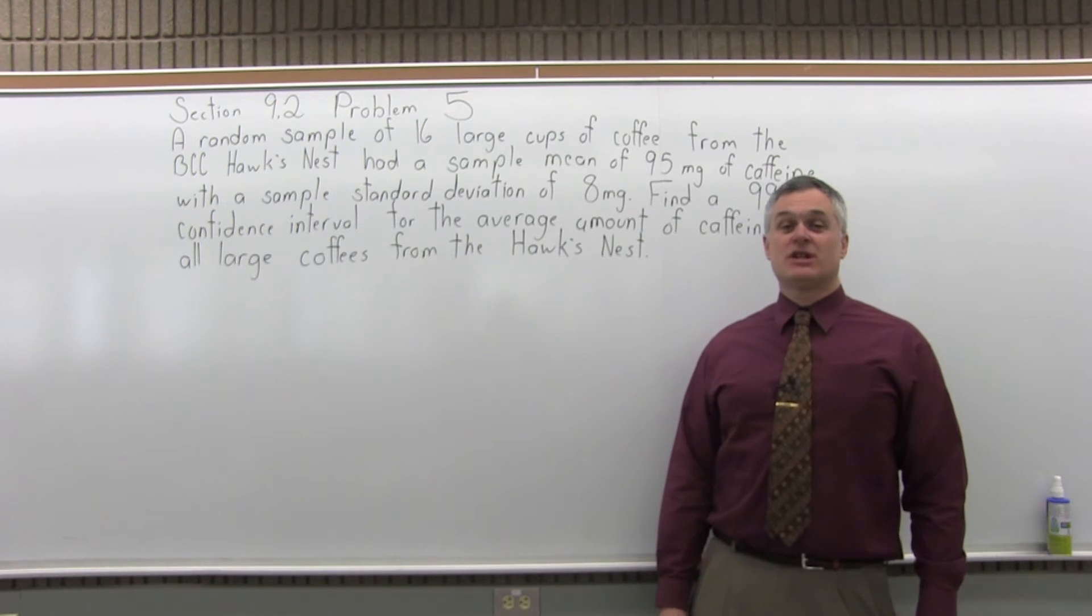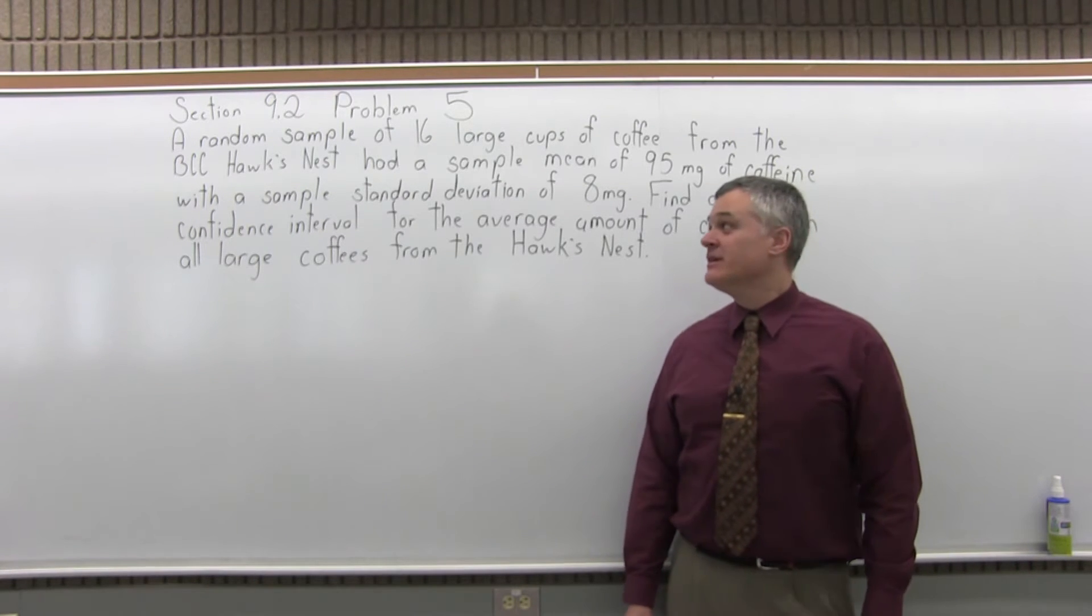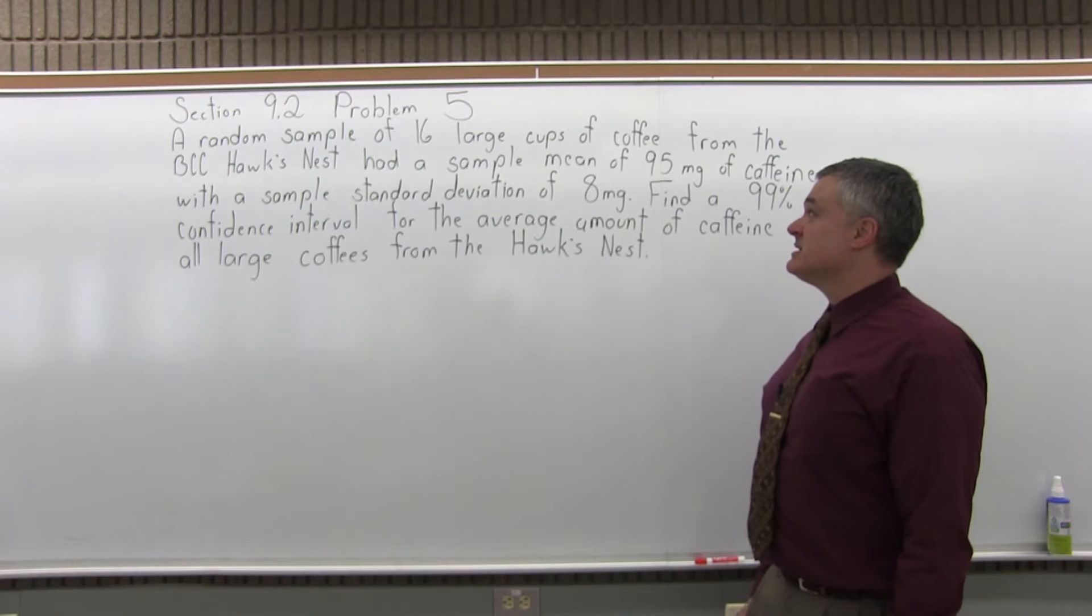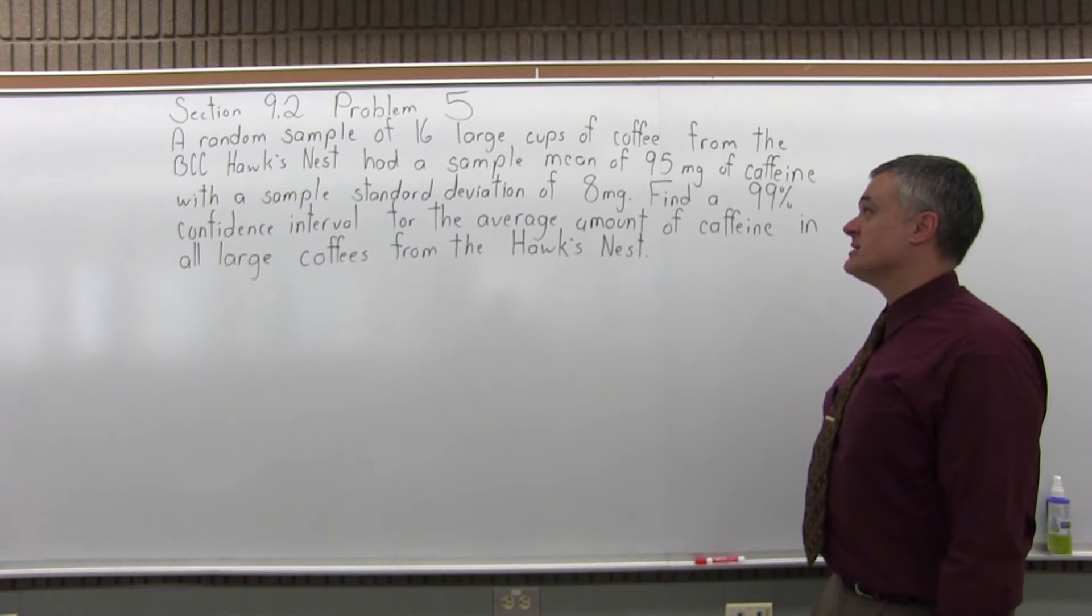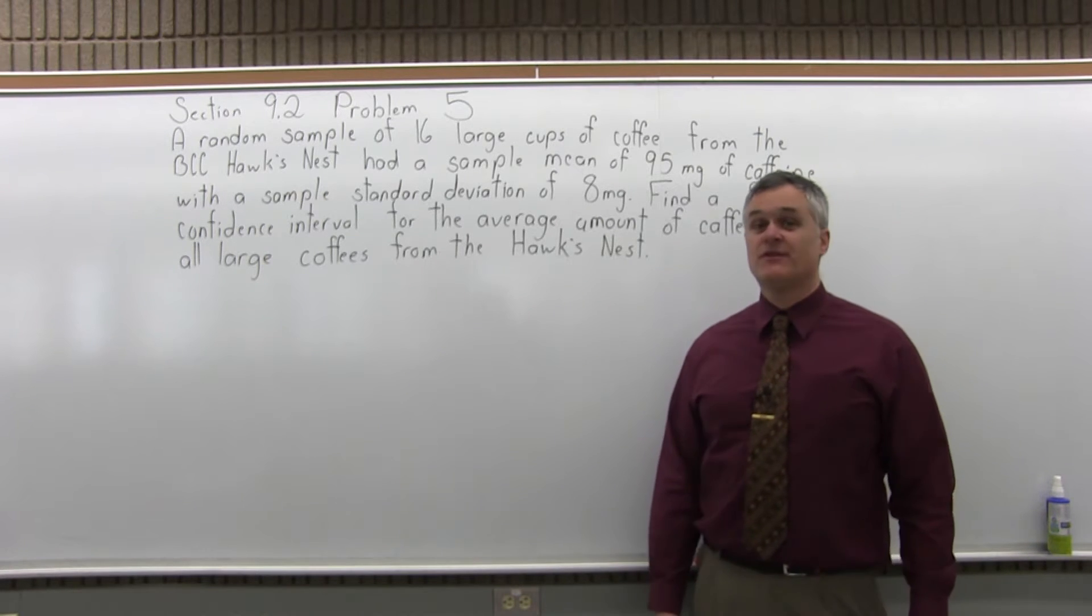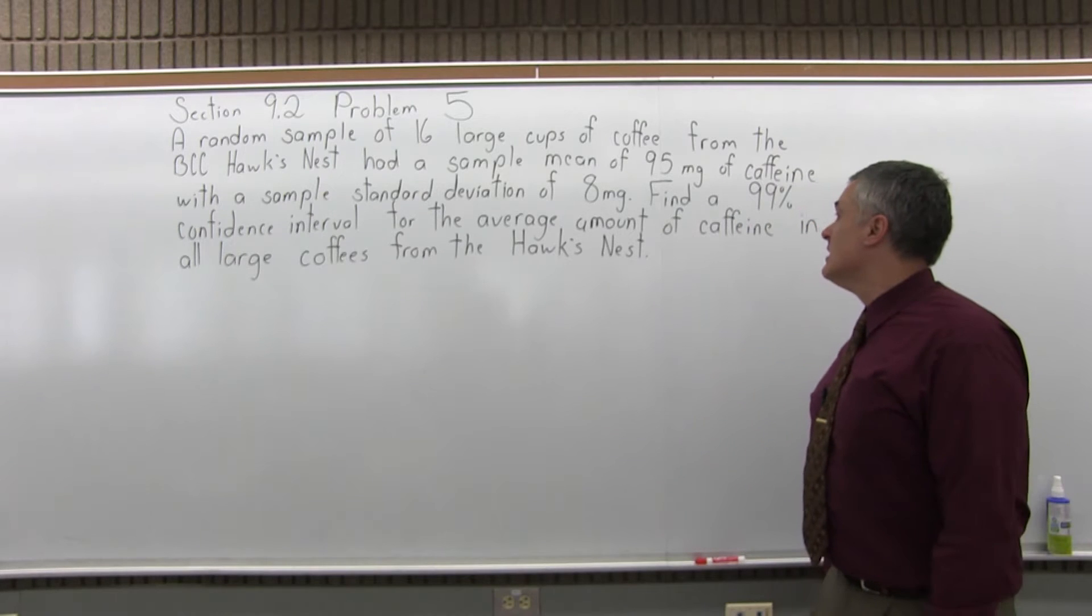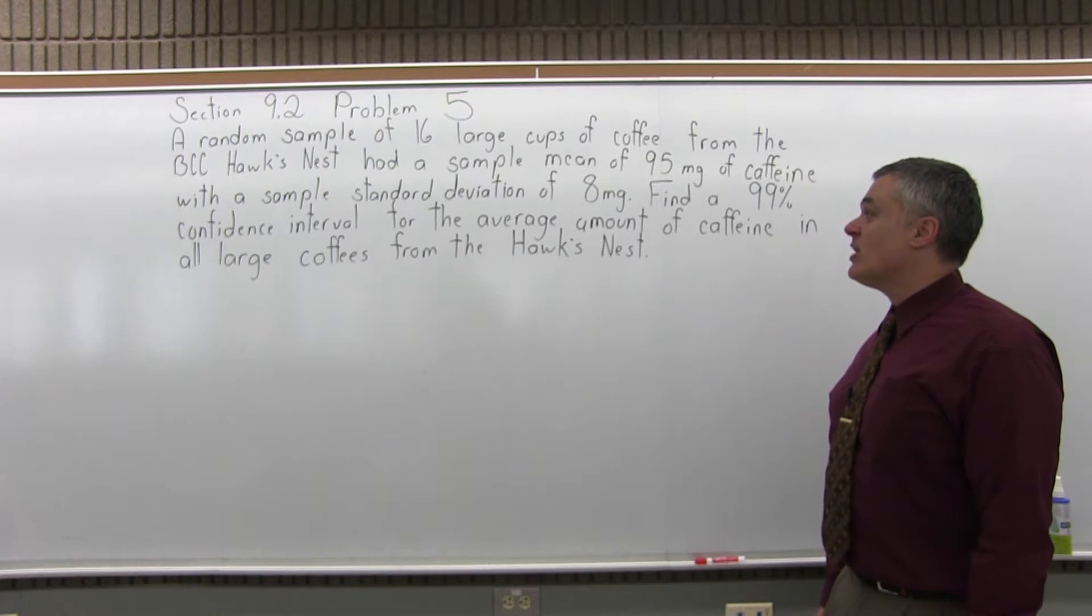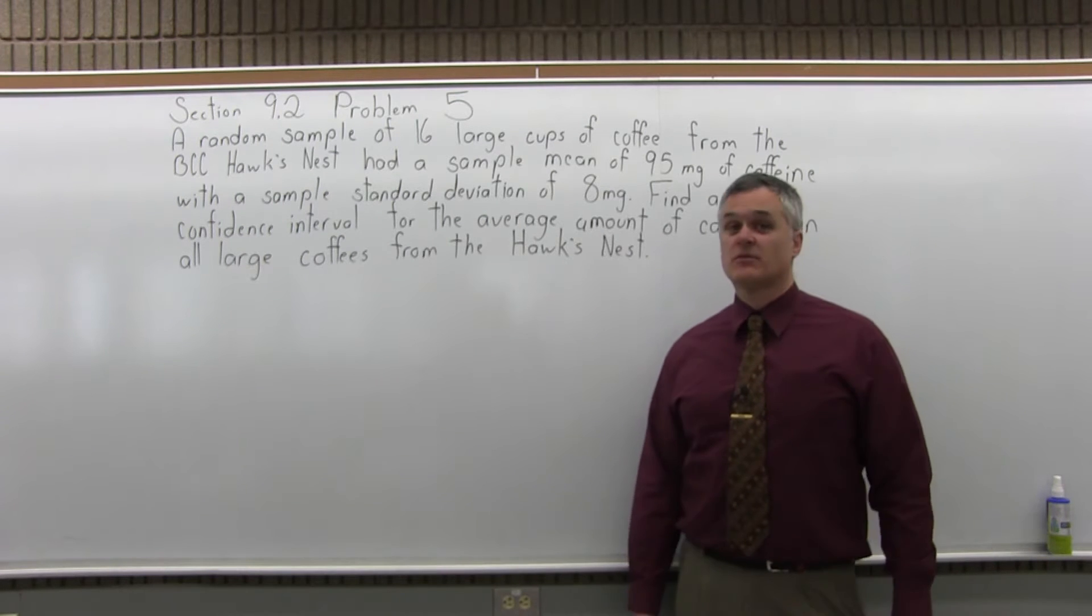This is Section 9.2, Problem 5. It says a random sample of 16 large cups of coffee from the BCC Hawk's Nest had a sample mean of 95 mg of caffeine with a sample standard deviation of 8 mg. Find a 99% confidence interval for the average amount of caffeine in all large coffees from the Hawk's Nest.